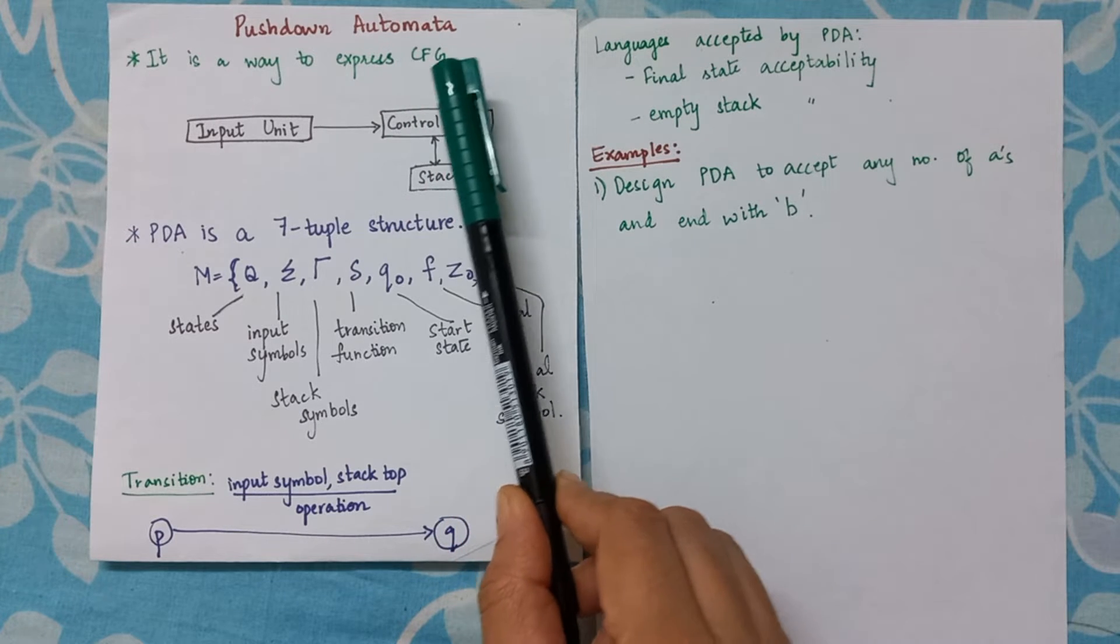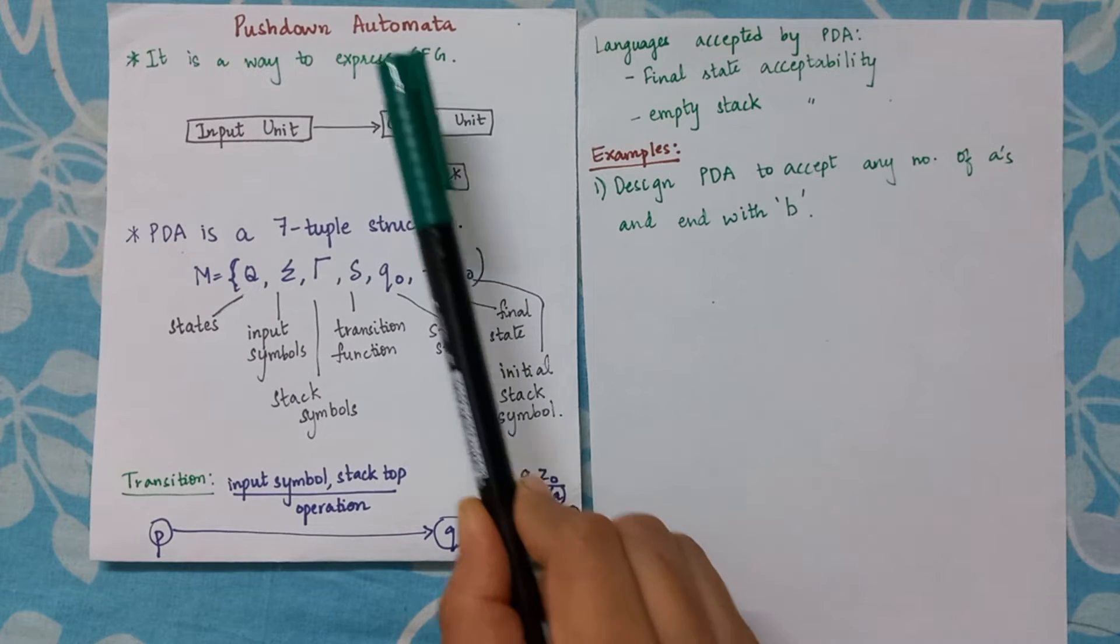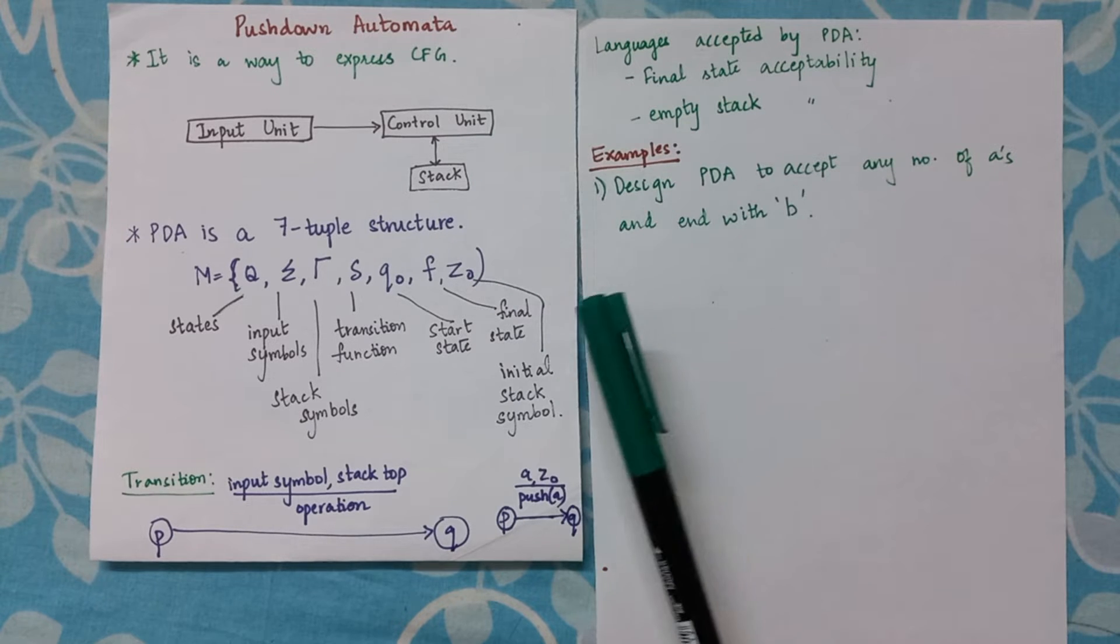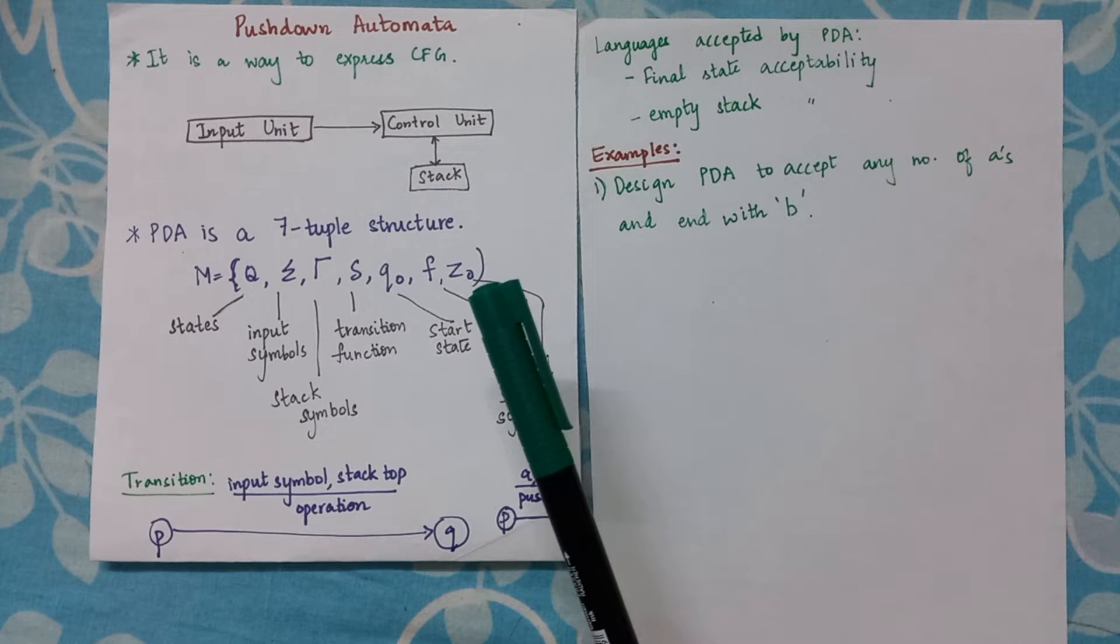Now in pushdown automata we also have a stack. PDA is a seven-tuple structure.